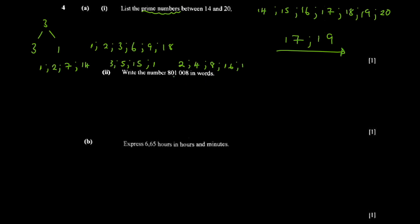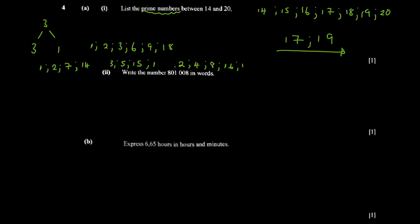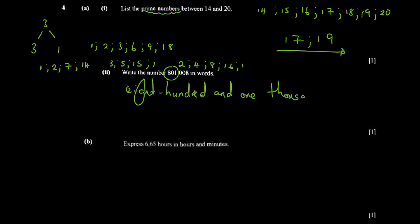The next question says: write the number 801008 in words. You'd read it as eight hundred and one thousand and eight. The thousands group is 801, and the remaining part is 8, giving you eight hundred and one thousand and eight.